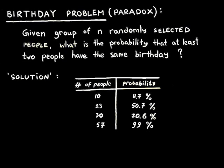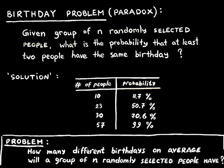Knowing all that, one could ask another question: how many different birthdays on average will a group of N randomly selected people have? And here comes a simple, cool, and completely non-rigorous solution.